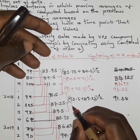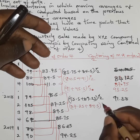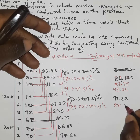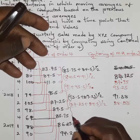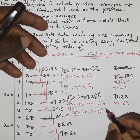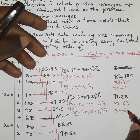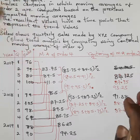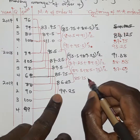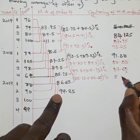The next pair: 89.5 plus 85.75, divided by two, gives 87.65. Then 85.75 plus 86.25, divided by two, gives 86.0.